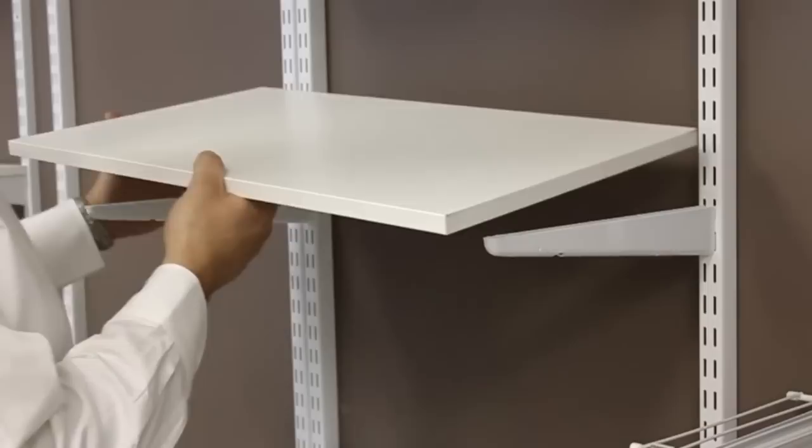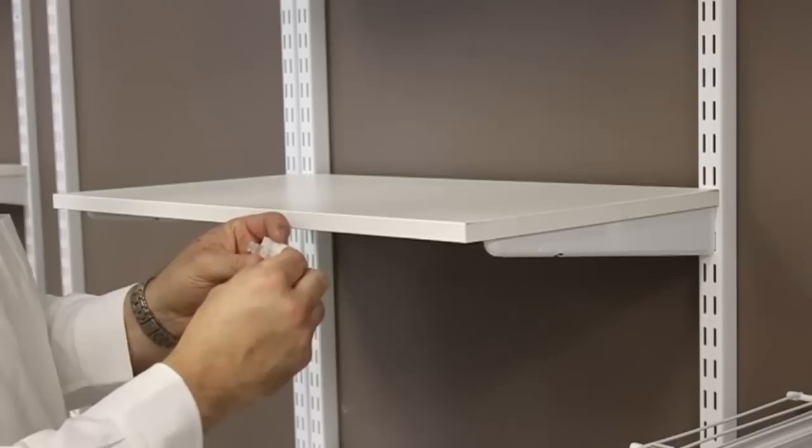Now that you have the rail, uprights, and brackets in place, it's time to add shelves. Since the brackets are already in place, figuring out where to place the shelves is easy.